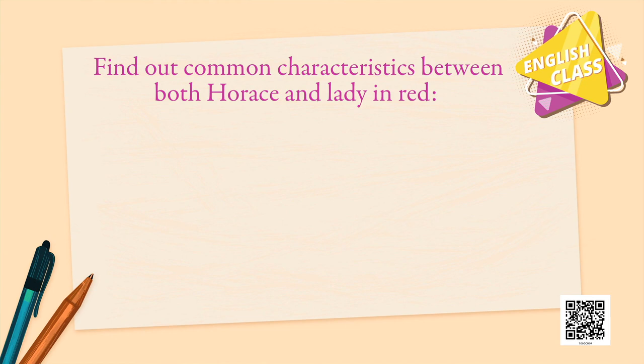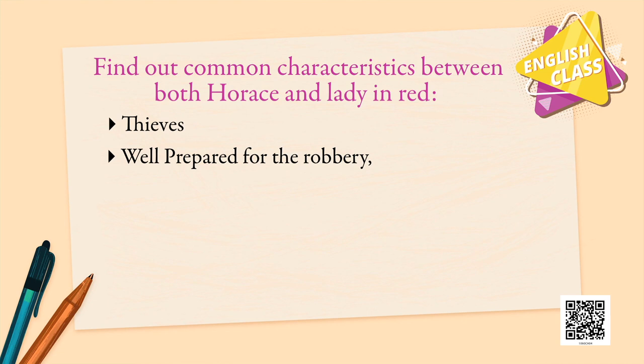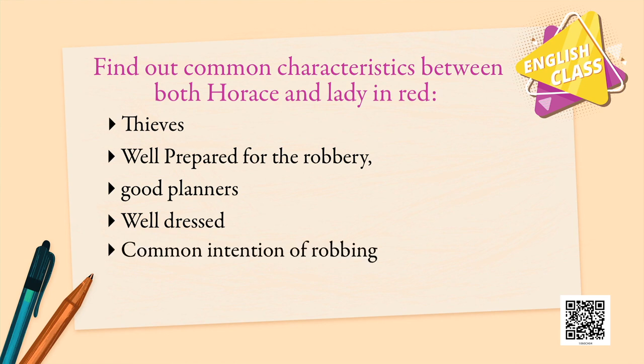Let us find out the common characteristics between Horace and the lady in red. We all know that both were thieves, so there must be something in common. Both were well-prepared for the robbery. They both knew there was no one at home. They were both good planners and well-dressed — nobody could guess they were thieves. They both had a common intention of robbing and both looked suave, meaning they looked stylish and from a good family.